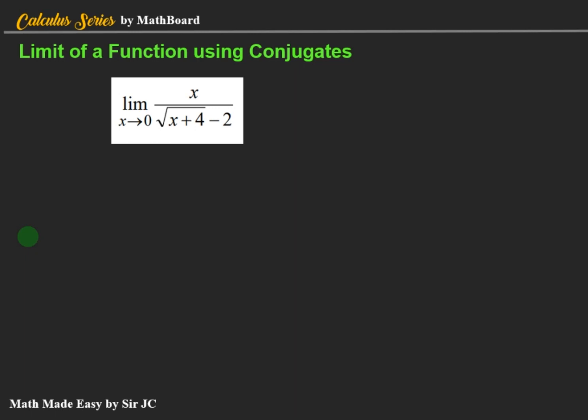The second example is the limit of x / (√(x + 4) − 2) as x approaches 0. When you replace x by 0, the result is indeterminate. So we are going to rationalize the denominator.